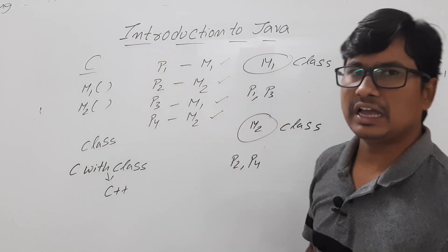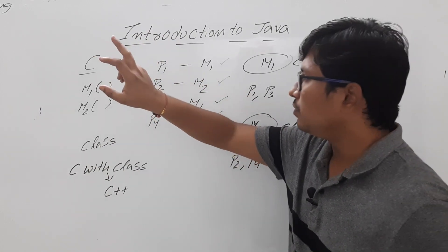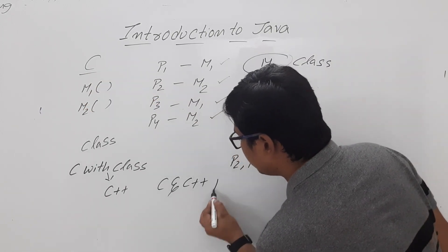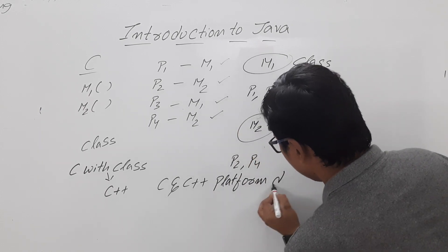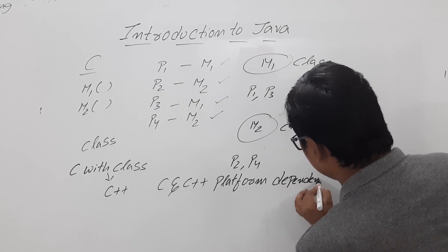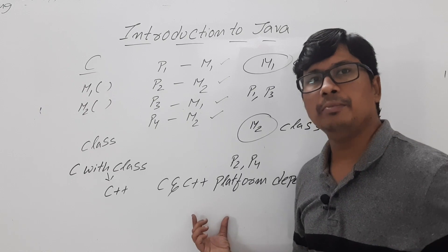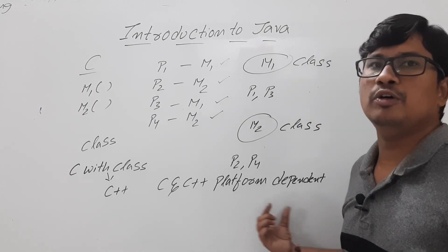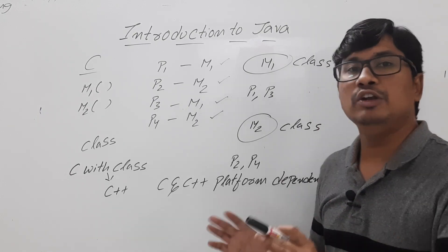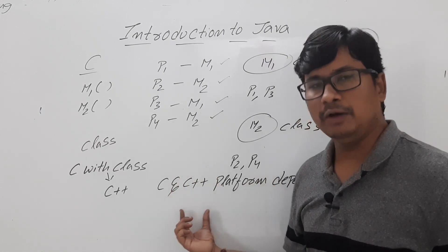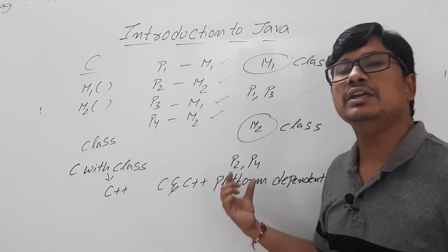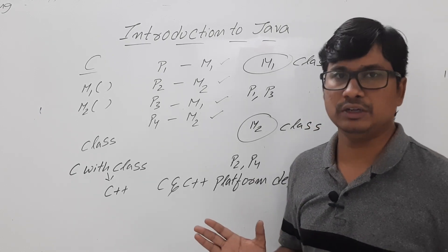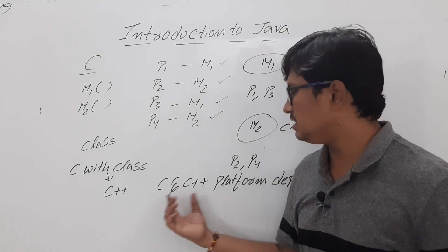You might ask: if C++ resolved those limitations, why was Java developed? The common issue with both C and C++ is that they are platform-dependent programming languages. This means if you compile a program on a particular platform, you can only execute it on that same platform. If you change the platform, the object file will not execute. You need to run the object file on the same platform where it was compiled.